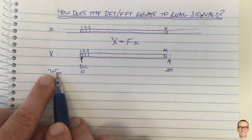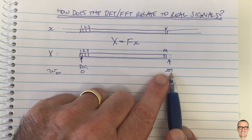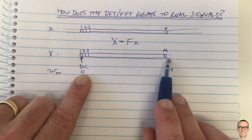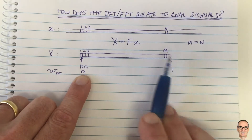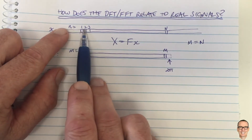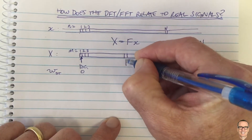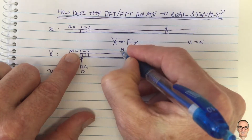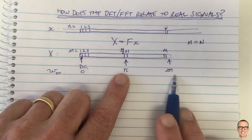Recall that the discrete time Fourier transform — different from the discrete Fourier transform — has basis functions that repeat every 2π. So 2π is the element at the end of this vector. We use n for the time domain index and m for the frequency domain index. An interesting property is that at element m = M/2 + 1 (where M is the length of the vector), we get the value π, which is half of 2π.